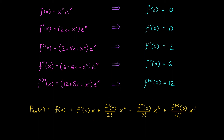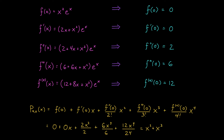We can now use these values to write down our fourth degree polynomial. P4 of zero is given by zero plus zero x plus two x squared over two plus six x cubed over six plus twelve x to the four over twenty-four, which simplifies to x squared plus x cubed plus x to the four over two.